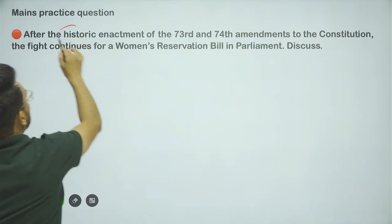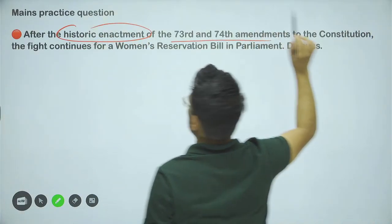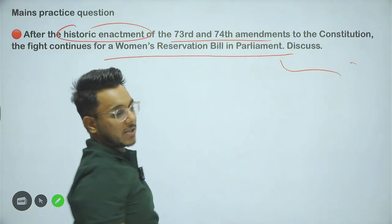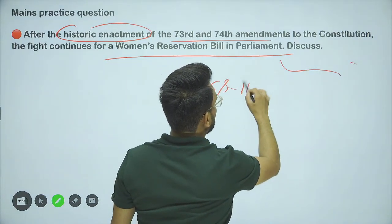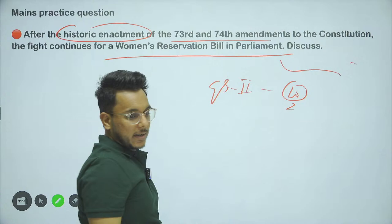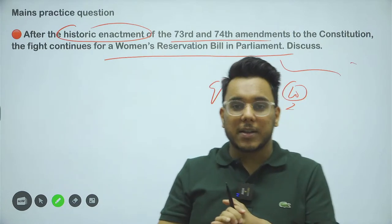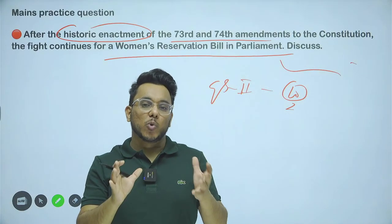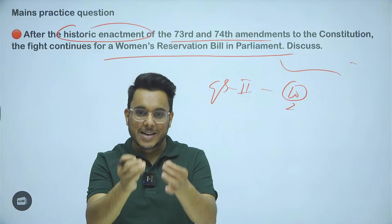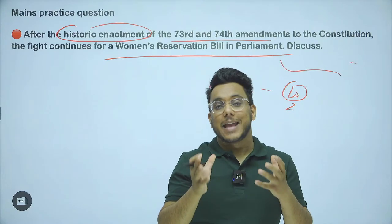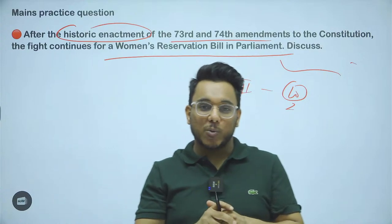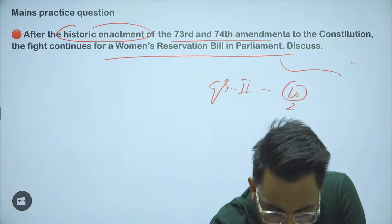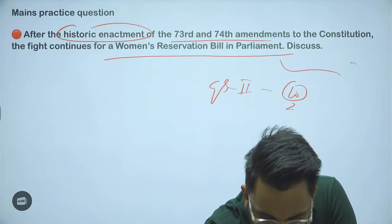The main practice question for today: 'After the historic enactment of the 73rd and 74th Amendment to the Constitution, the fight continues for the Women's Reservation Bill in Parliament — still it has not been passed.' This is a GS Paper 2, 10-marker question. That is all about this session. If you are liking the video, please show your appreciation by liking and leaving your comments — your comments really encourage and motivate us. Thank you so much. We will meet tomorrow; till then, please take care of yourselves.